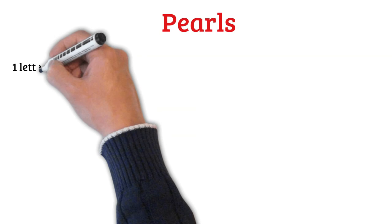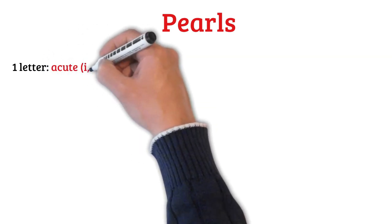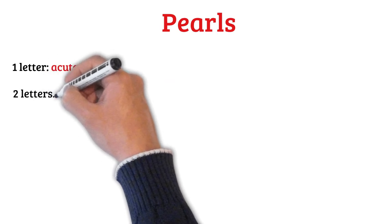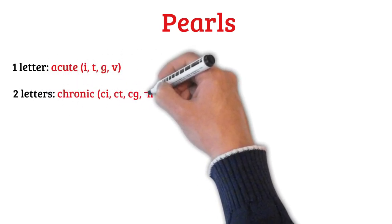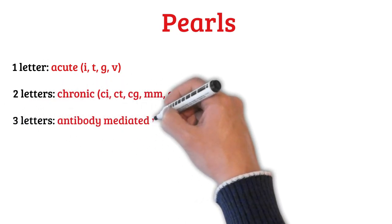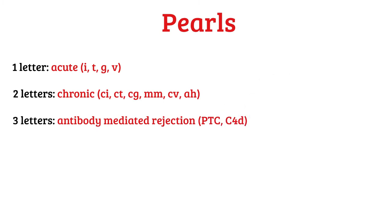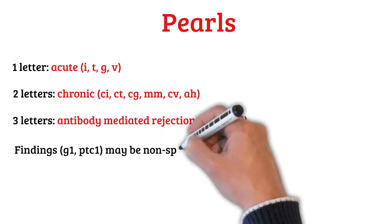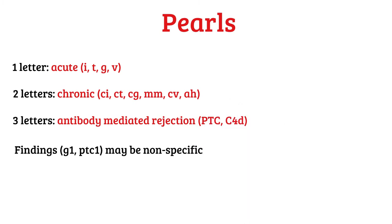Finally, some closure pearls. Remember: one letter indicates acute — I, T, G, or V. Two letters indicate chronicity — CI, CT, CG, MM, CV, and AH. Three letters indicate antibody-mediated rejection — PTC or C4D. You may however find PTC or G or any other code not necessarily associated with rejection or infection; it might be a nonspecific finding.